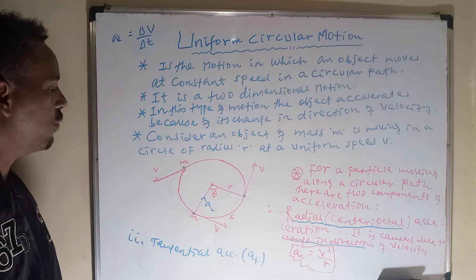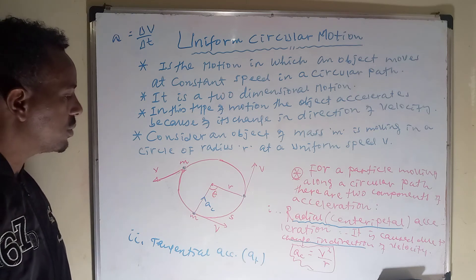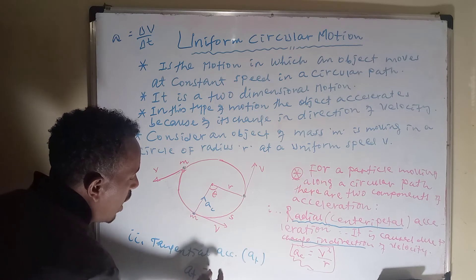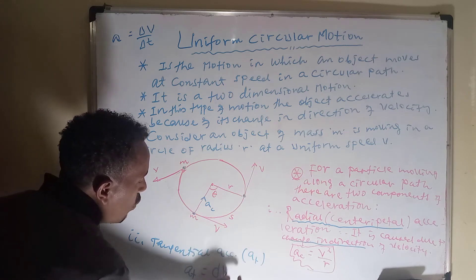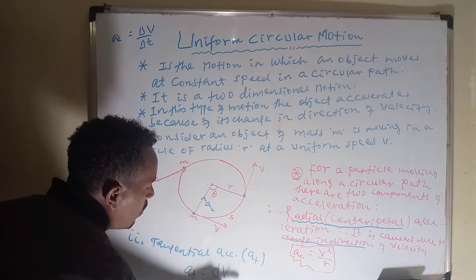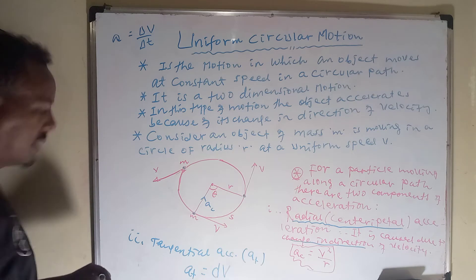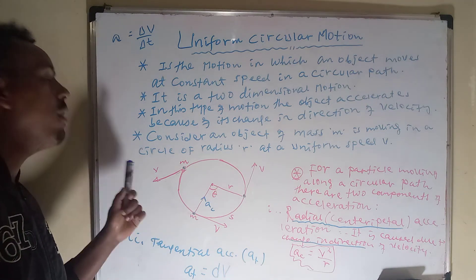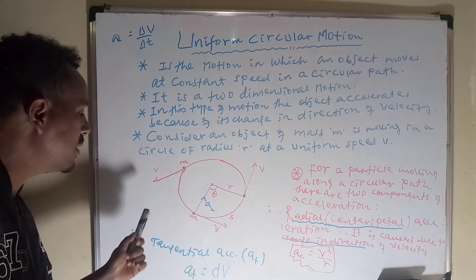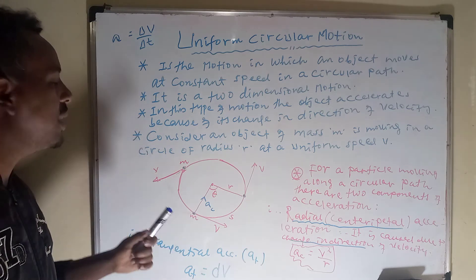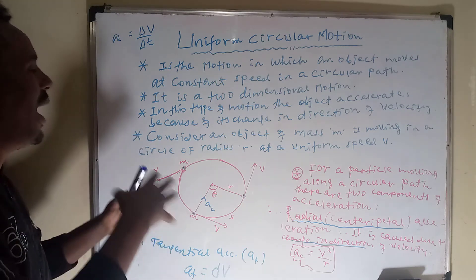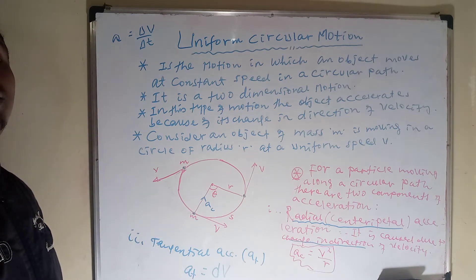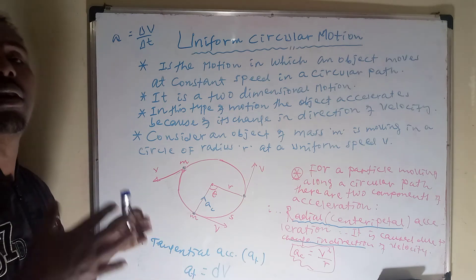Due to a change in the magnitude of velocity, tangential acceleration is formed. Tangential acceleration refers to the derivative of velocity with respect to time. If there is a change in the magnitude of velocity during circular motion, tangential acceleration is formed.